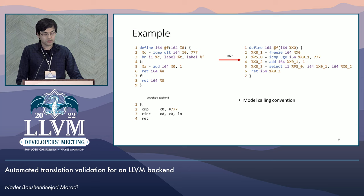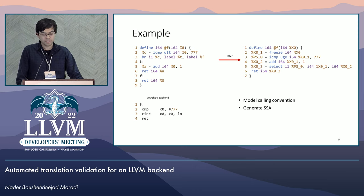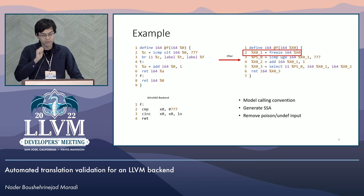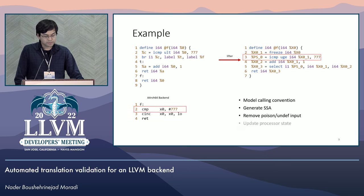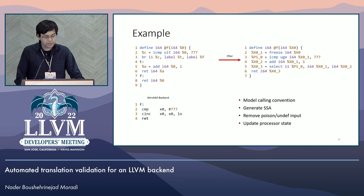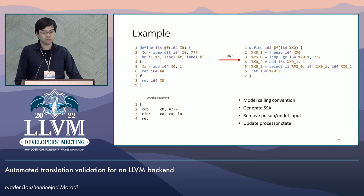Since the lifted IR is in SSA form while the emitted assembly isn't, the lifter converts the generated assembly into SSA form. We need to do this for writes to the same hardware registers and maintain the processor state using virtual registers in SSA form. The concept of poison and undef don't exist at the assembly level. The lifter models this by freezing the input parameter to remove potential poison and undef values. The lifter also keeps track of the processor state. For example, the compare instruction updates the processor PSTATE flags based on the comparison result. The flags are then used in the conditional increment instruction that follows. The lifter keeps track of the relevant PSTATE in the virtual register PS0, and later uses this value in the condition for a select instruction to choose the correct output.